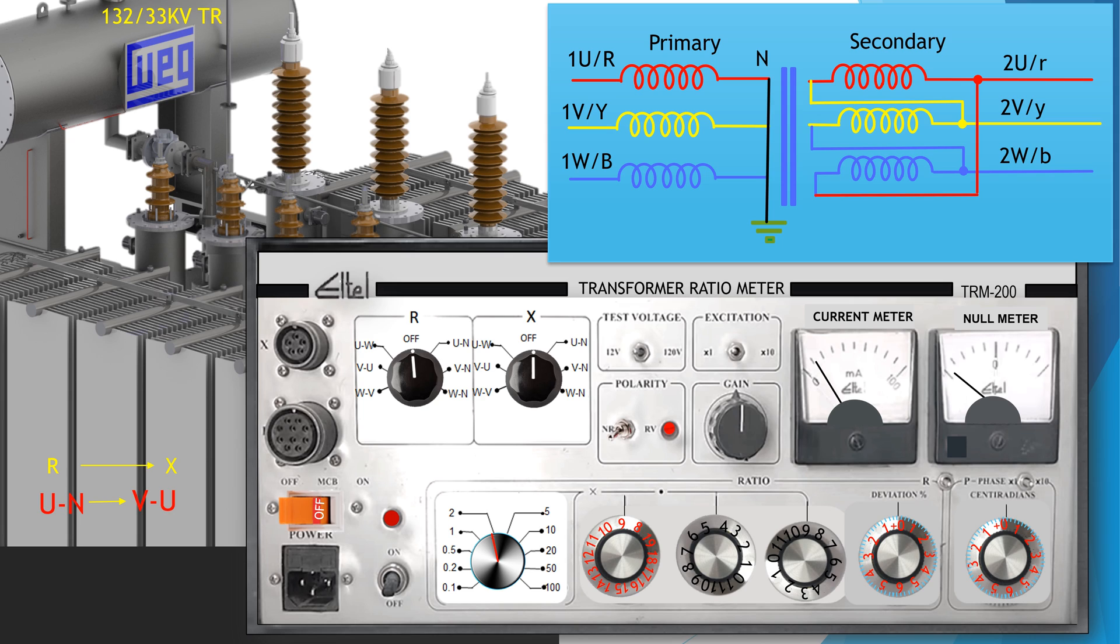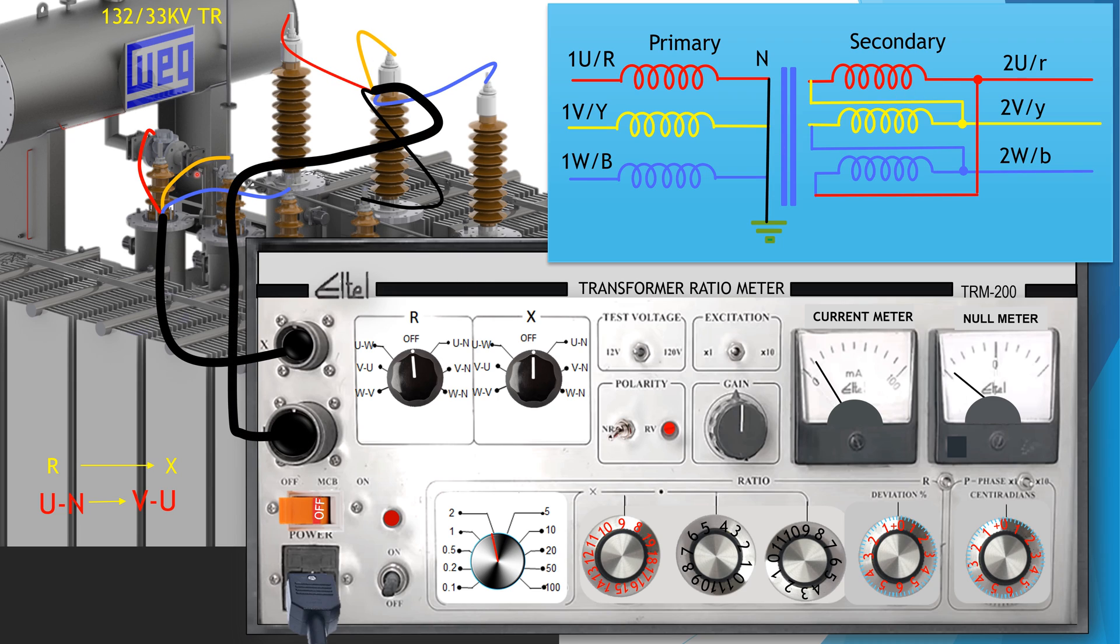We shall conduct test on red phase, that is U phase as per testing kit. Primary side phase setting will be between U and N and secondary side phase setting will be between V and U, the same phase of the two different windings of the transformer.